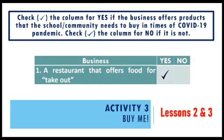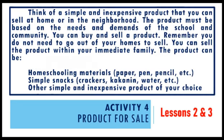Activity 3: Buy Me. Check the column for 'yes' if the business offers products that the school or the community needs to buy in times of the COVID-19 pandemic. Check the column for 'no' if it is not. For example, a restaurant that offers food for takeout. If your answer is yes, check the column for yes. If your answer is no, check the column for no.